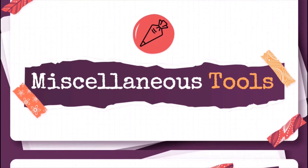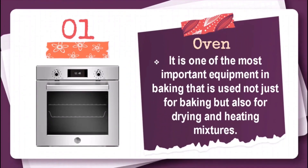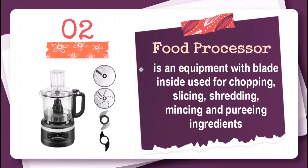Miscellaneous tools. Oven is one of the most important equipment in baking, used not just for baking but also for drying and heating mixtures. Food processor is an equipment with a blade inside used for chopping, slicing, shredding, mincing, and pureeing ingredients.